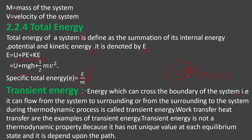Transient energy is energy that can cross the boundary of the system and go into the surroundings. The energy within the system that can cross the boundary and go to the surroundings is called transient energy. It can flow from the system to the surrounding or from the surrounding to the system during a dynamic process. Work transfer and heat transfer are examples of transient energy. Transient energy is not a thermodynamic property because it does not have a unique value at each equilibrium state.